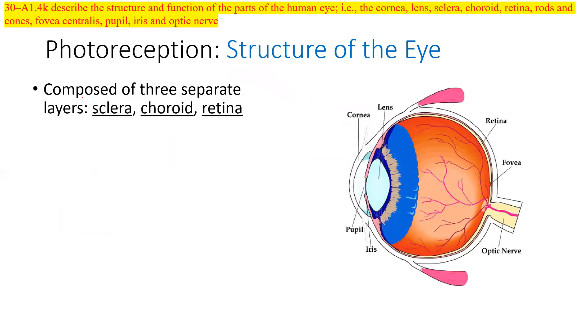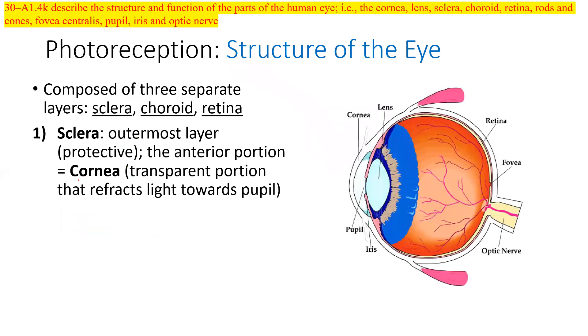We've talked about the retina. Let's go through these in a little bit more detail. Structure of the eye. Composed of three separate layers: sclera, choroid, and retina. Sclera is the outermost. And we said the cornea is the transparent portion.